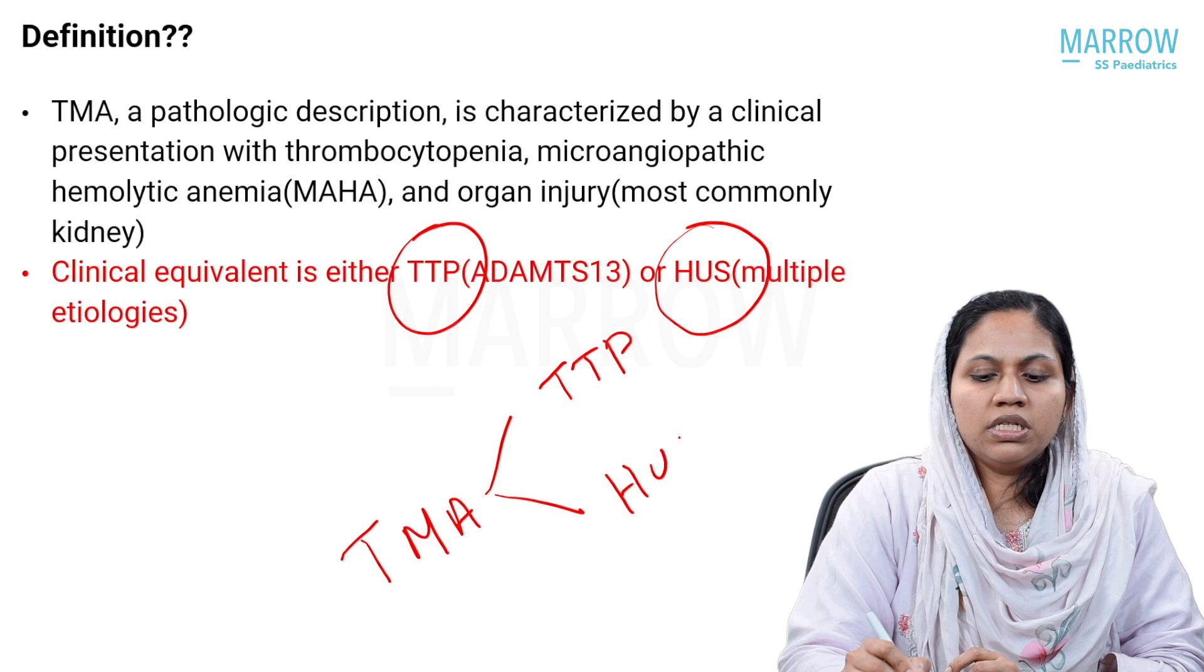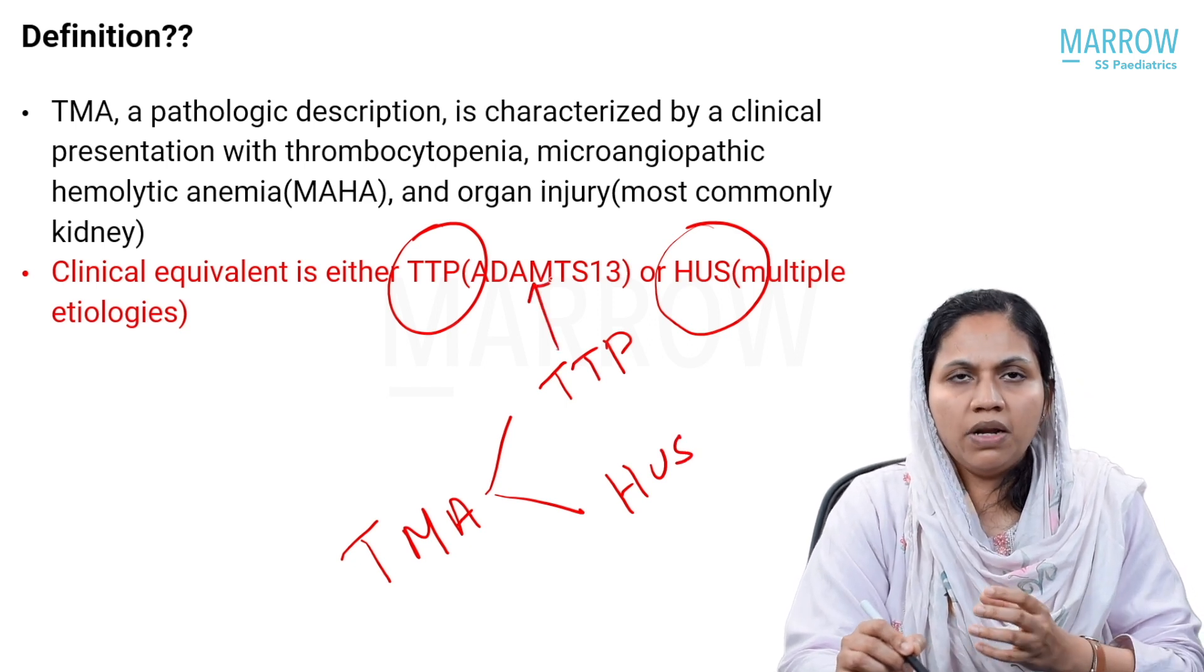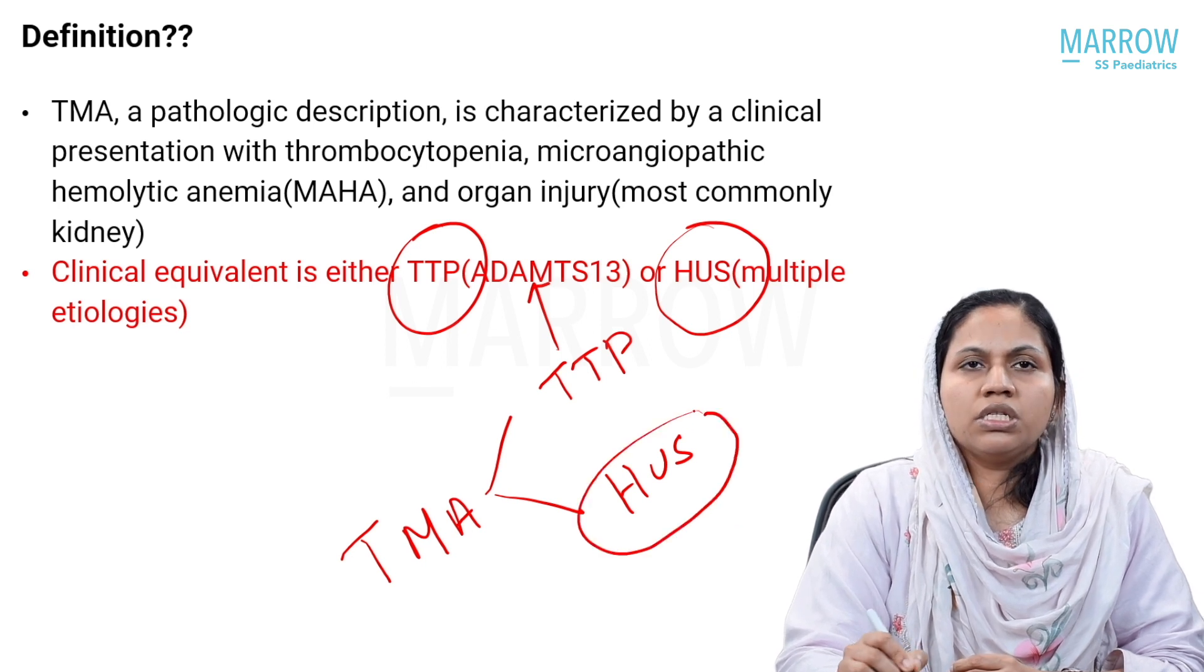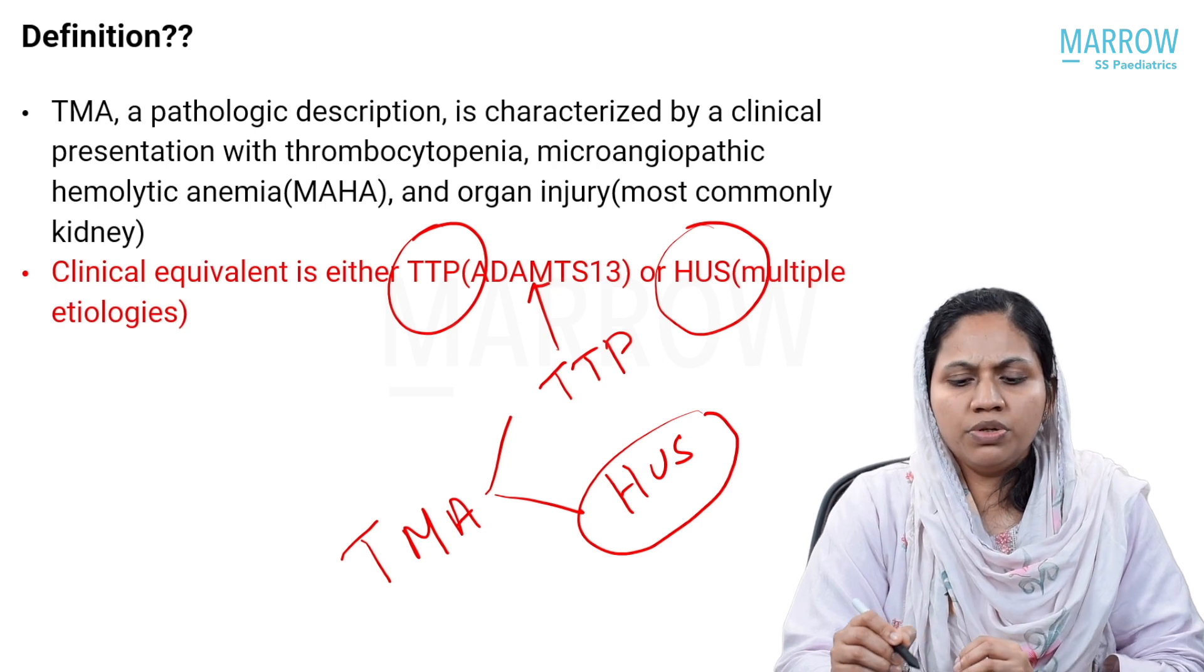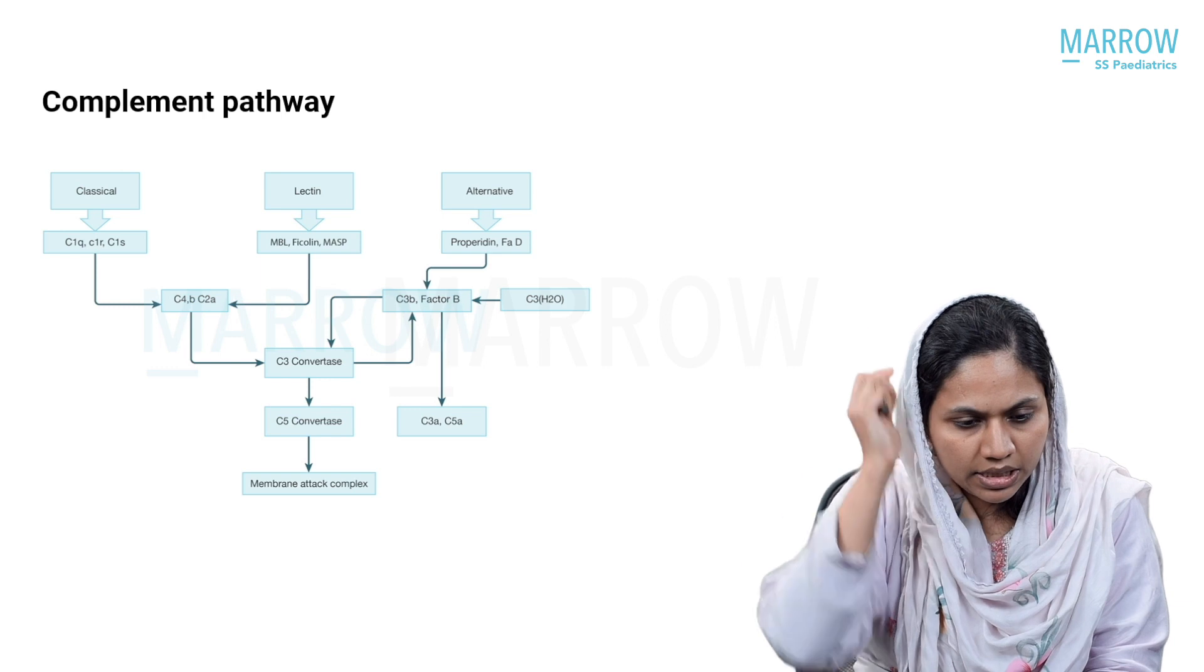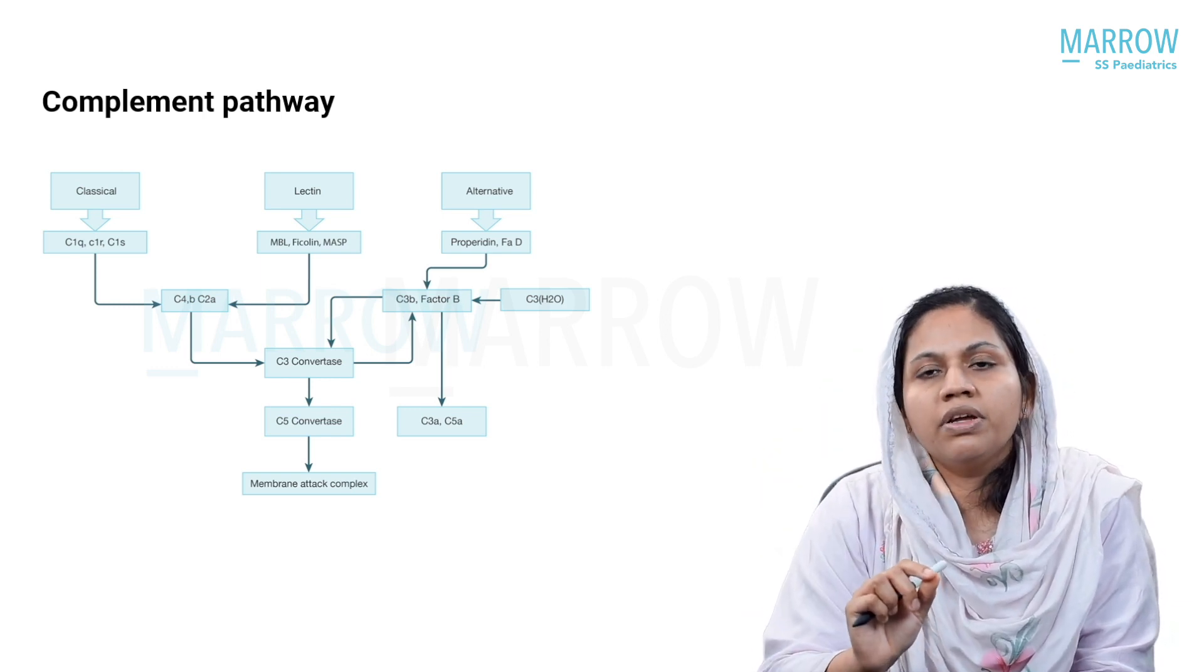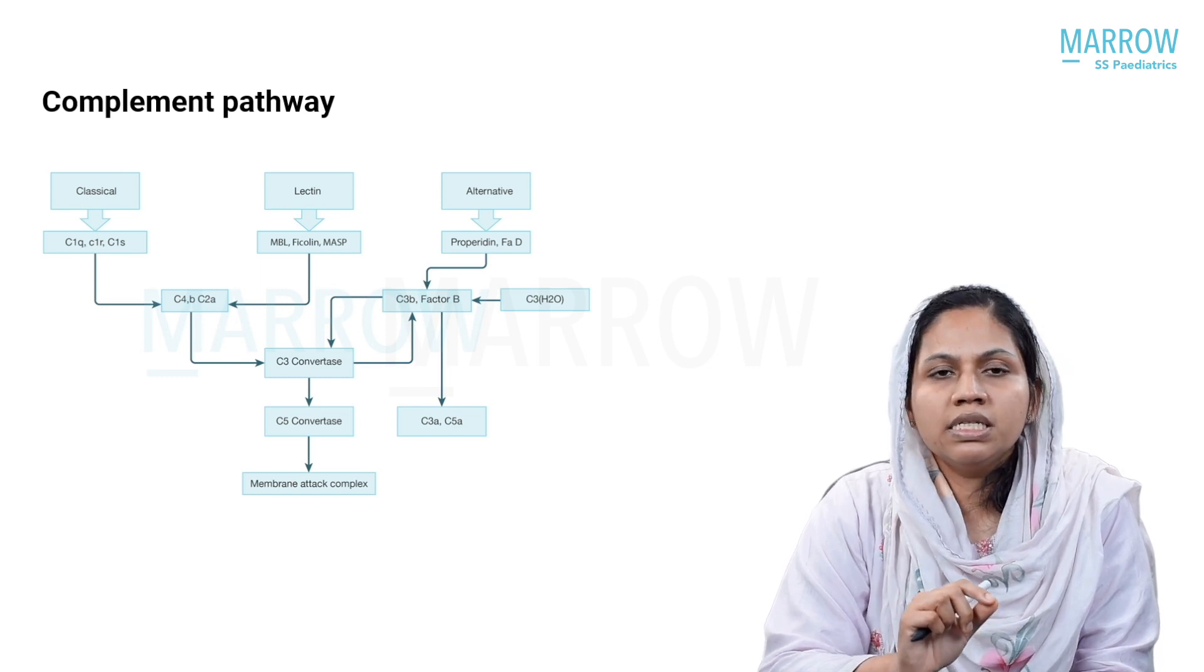TTP is associated with disorders of the ADAMTS13 protein. We will be looking at it in detail later. And HUS is usually due to multiple etiologies. We will be looking into detail of HUS also. Now before going into the description of TMAs, we will just have a recap about complement pathway.